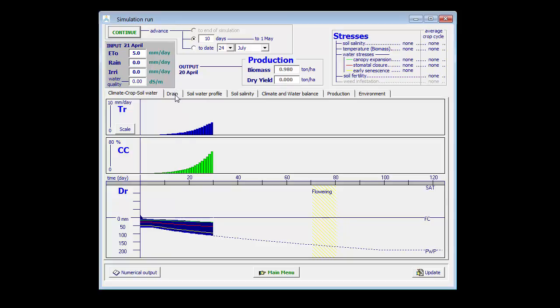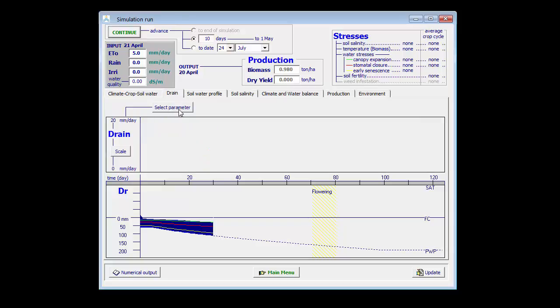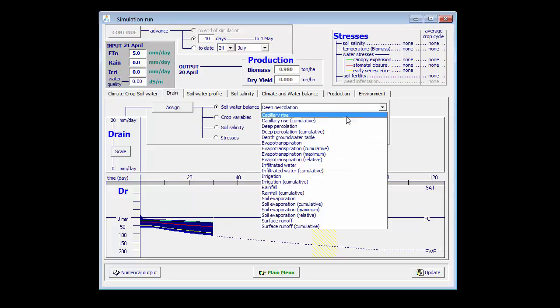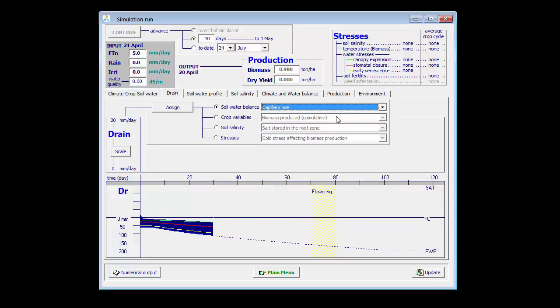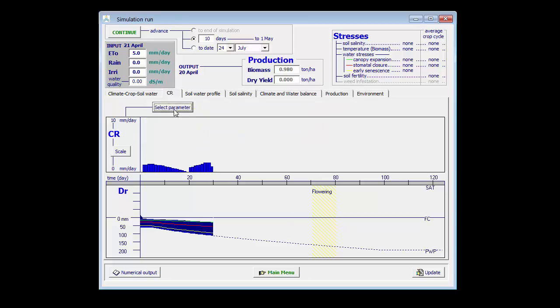If we look now for the capillary rise in the second tab sheet and I select capillary rise as the parameter to be plotted, I assign it and I can see that there is indeed some capillary rise.